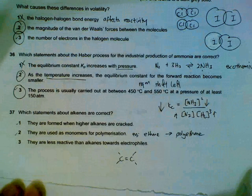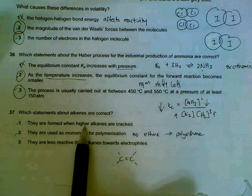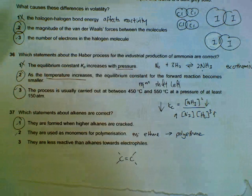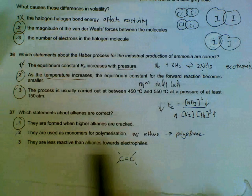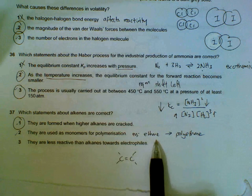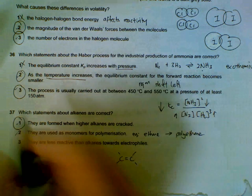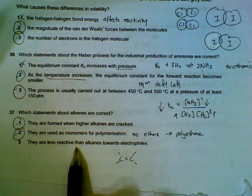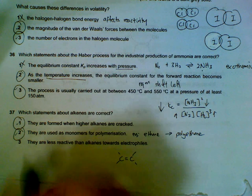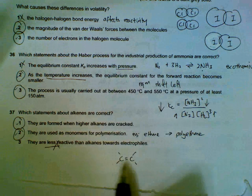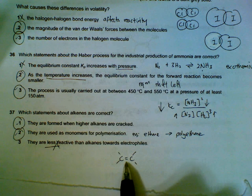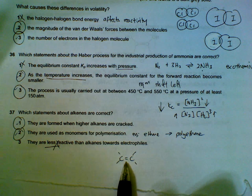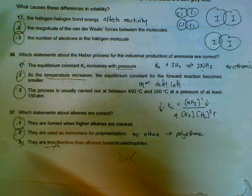Which statements about alkenes are correct? Cracking of alkenes: bigger alkanes give us alkenes, that's true. We use alkenes to polymerize, like your ethene will become polyethene, true also. Compared to alkanes, they're actually more reactive towards electrophiles, not less reactive, because your alkenes have a high electron density. They will attract electrophiles more readily, so statement three is wrong.